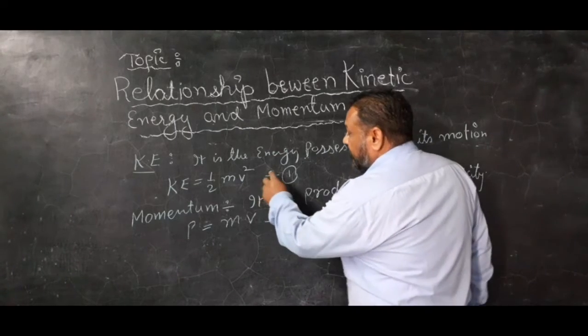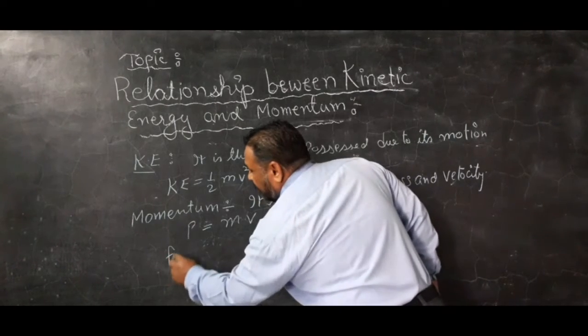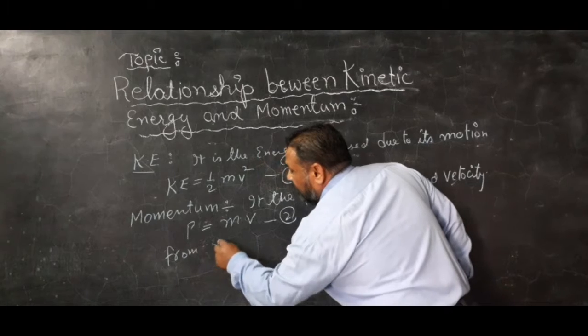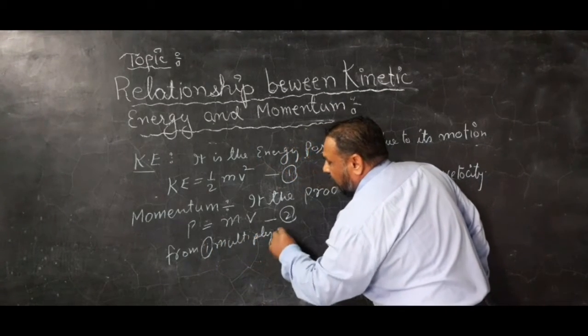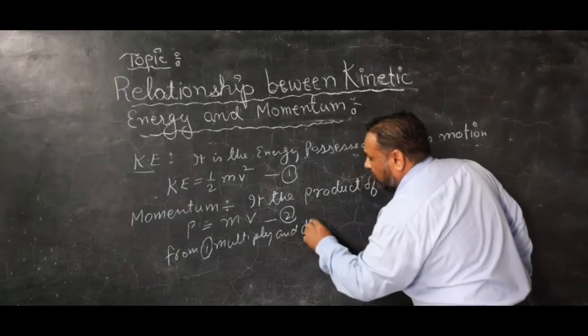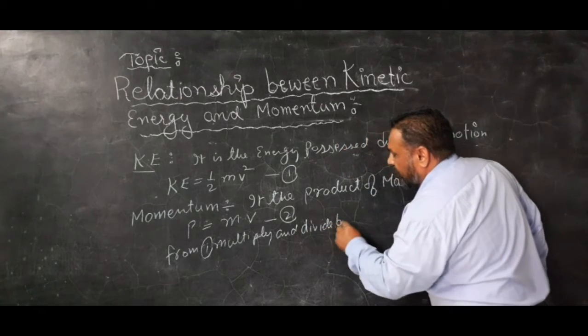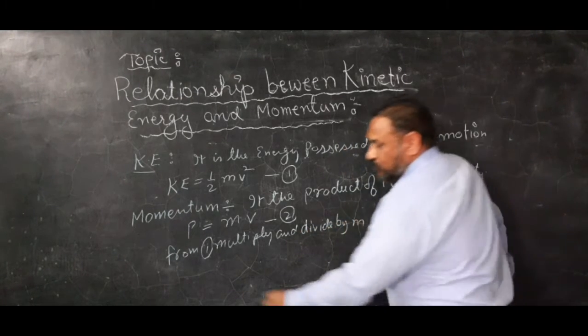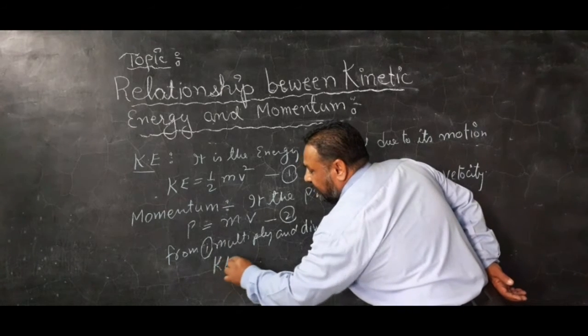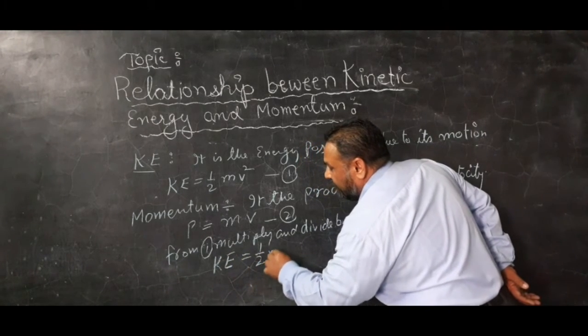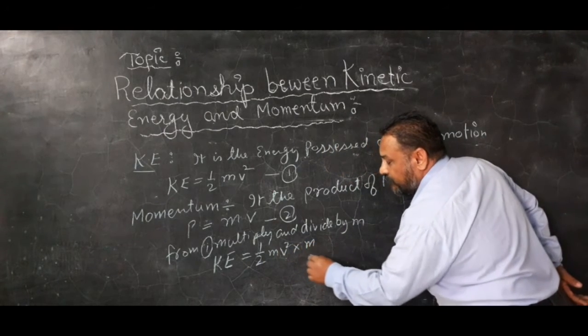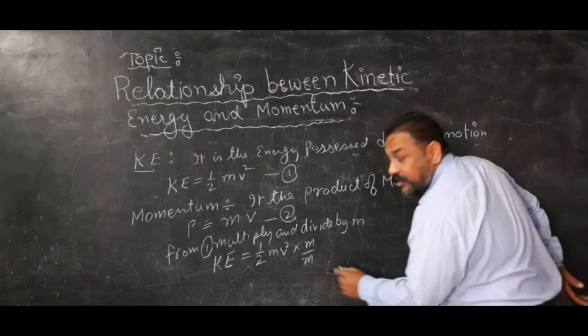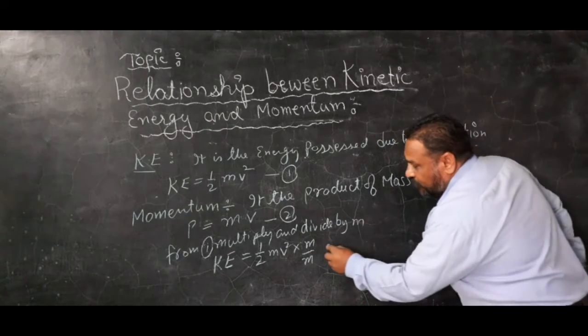First of all, let me take and multiply by m and divide by m. So kinetic energy equals half mv squared multiplied by m and similarly divided by m.